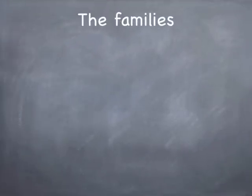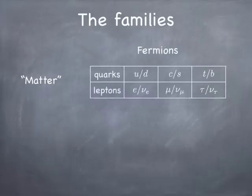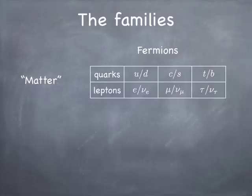Let's get started. First of all, there are two major families in the standard model. There's the matter part, which consists of the fermions, and there are two groups of fermions. The quarks: up and down, charm and strange, and top and bottom. They come in pairs. Each pair has a positive and negative member. The positive is plus two-thirds charge; the negative is minus one-third charge.